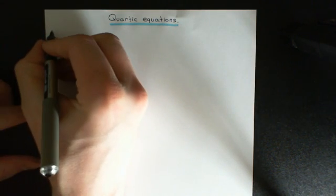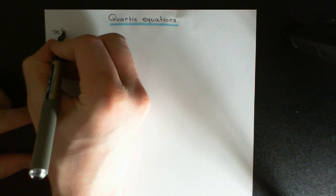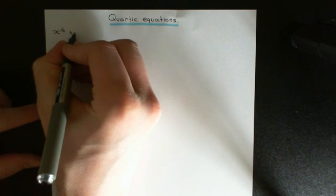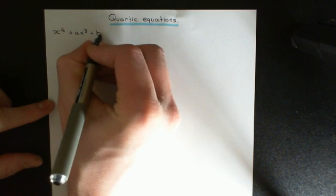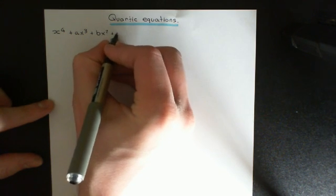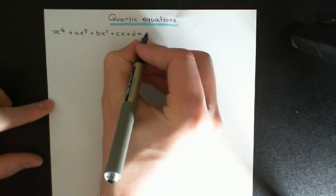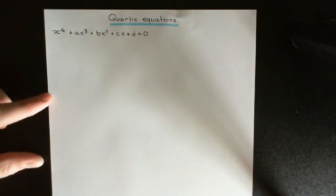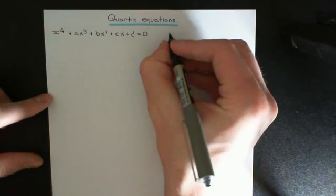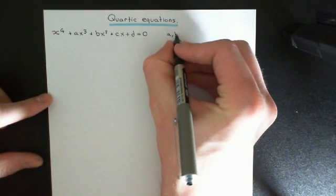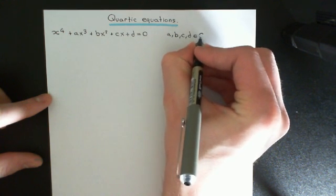A quartic equation is one where you have a degree four term: x to the power of four plus ax cubed plus bx squared plus cx plus d equals zero. We're working in the complex numbers, and we're going to assume that all of these coefficients a, b, c, and d are elements of the complex numbers.